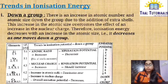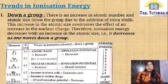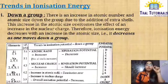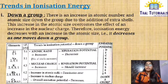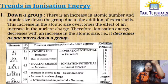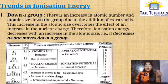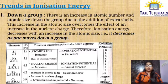Trends in Ionization Energy have two cases: down a group and across a period. Down a group, ionization energy decreases. There is an increase in atomic number and atomic size when going from top to bottom, due to the addition of extra shells. This increase in atomic size overcomes the effect of the increase in nuclear charge.